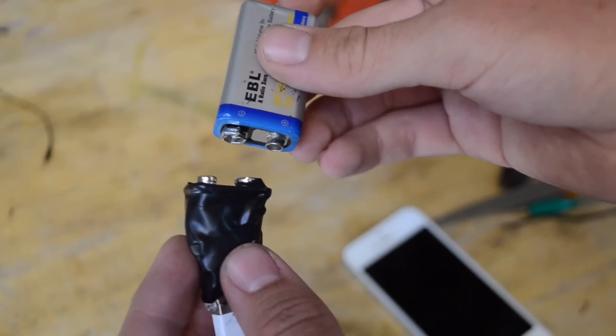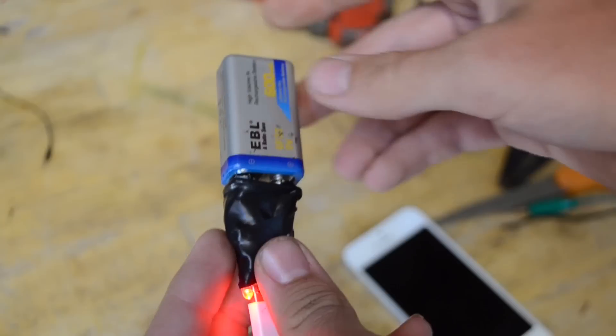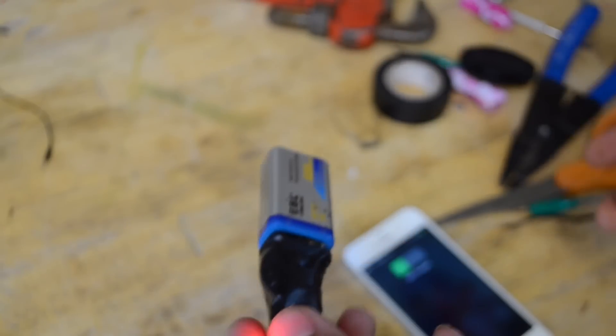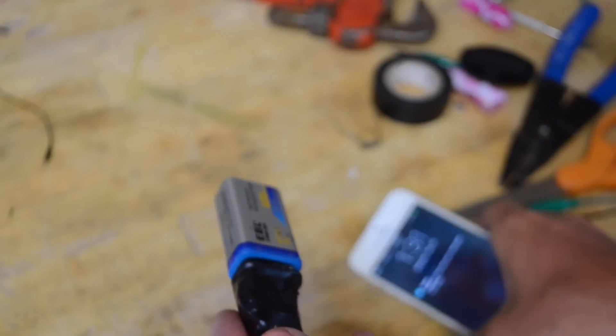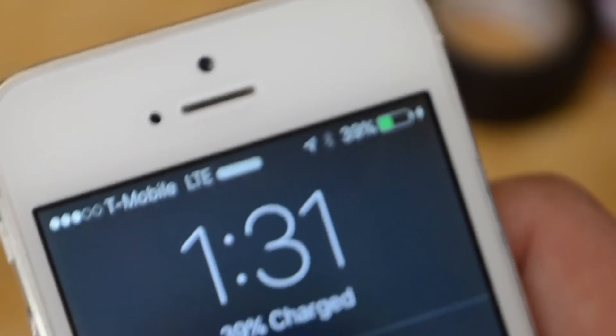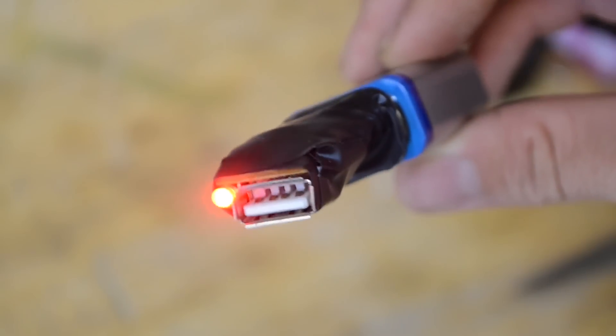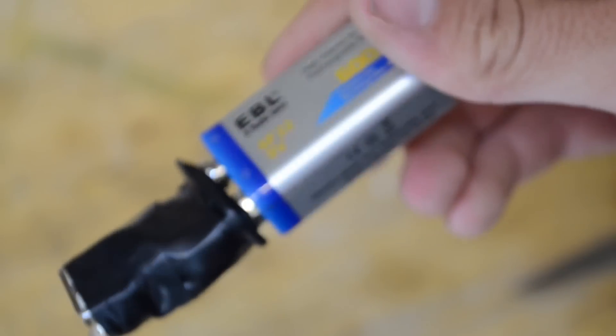And now let's go ahead and connect up the 9 volt battery and see if it turns on. There we go. Look at that. As you can see, we have the green charging symbol on the phone, so we know that it's working properly. Now you know how to make your very own USB portable charger powered by a 9 volt battery.